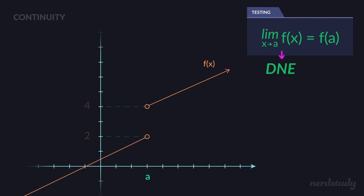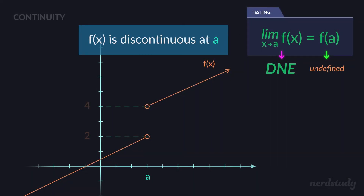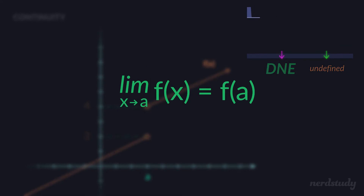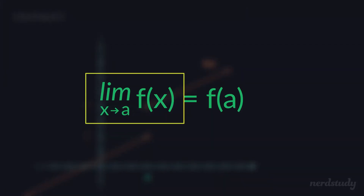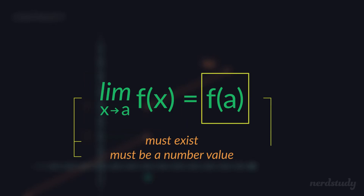Those are two different numbers, which means the limit overall does not exist. And f(a) — if you look at it, there is an empty circle here and it's not defined at a — so f(a) is undefined. Some people think that when the limit does not exist, that somehow equals undefined. This is definitely not the case. When the limit does not exist and f(a) is undefined, those two don't equal each other, and this graph is discontinuous at point a. As soon as you know the limit does not exist, it doesn't even matter what f(a) is — you know right away this is not going to be continuous.